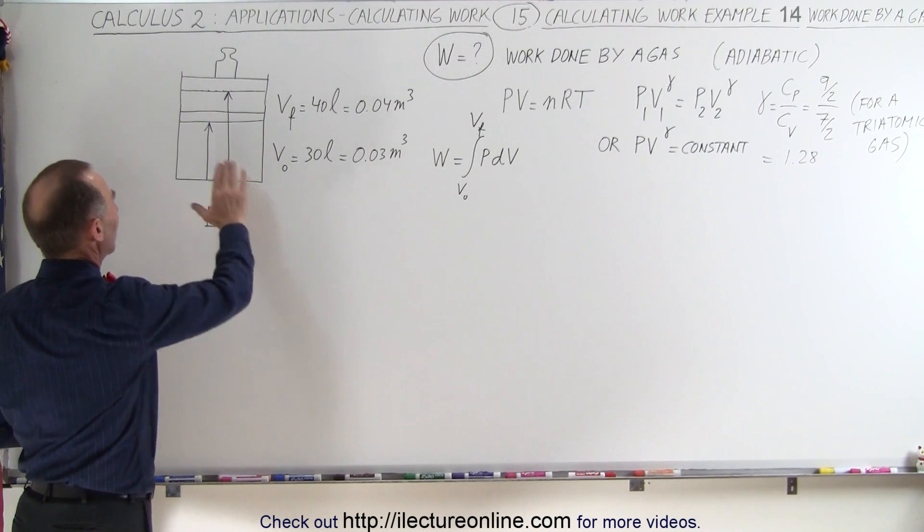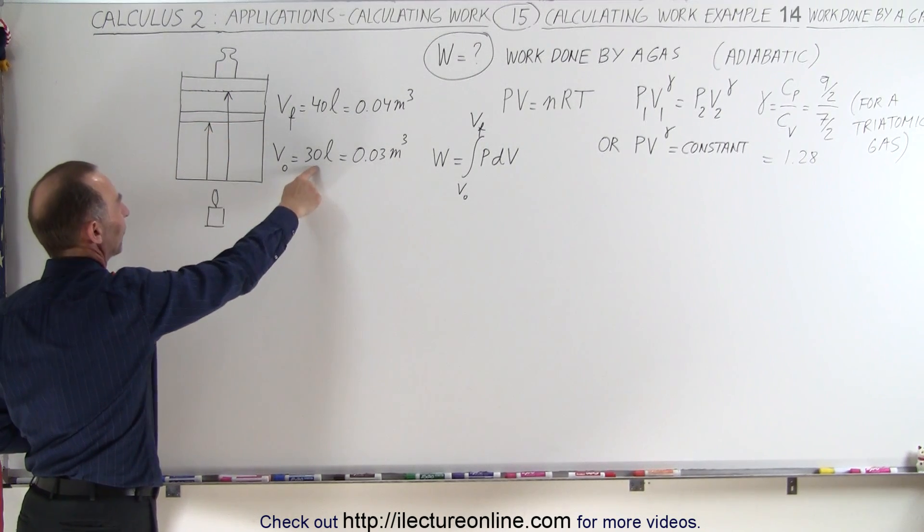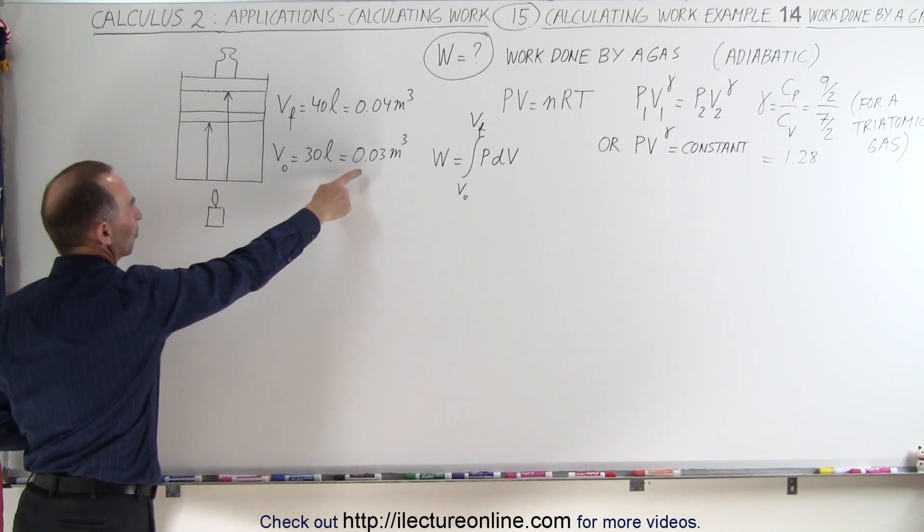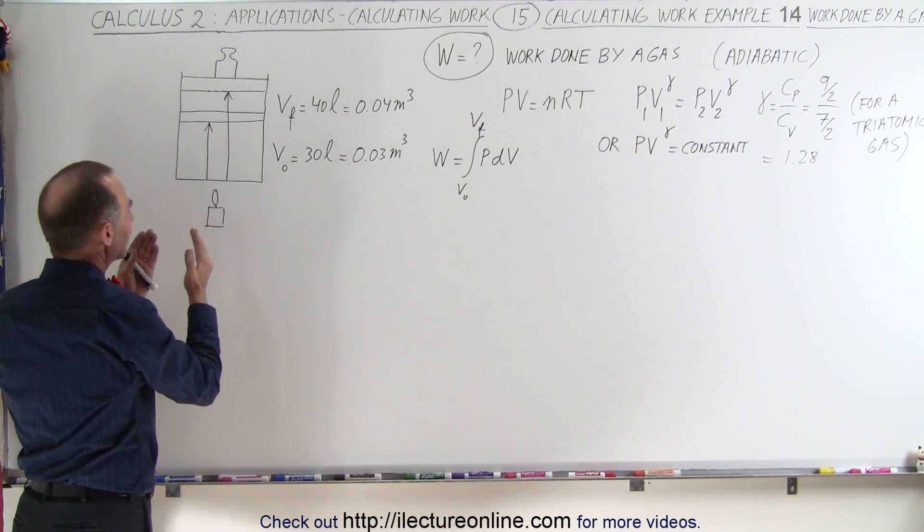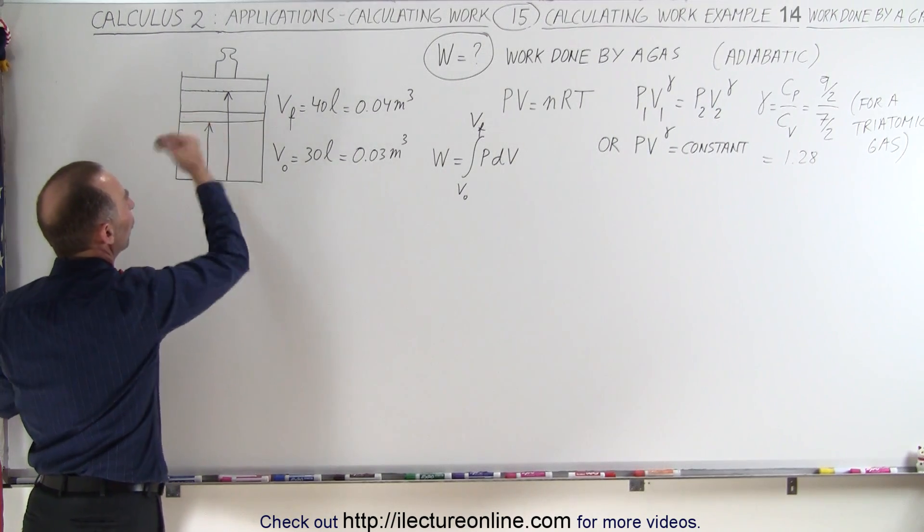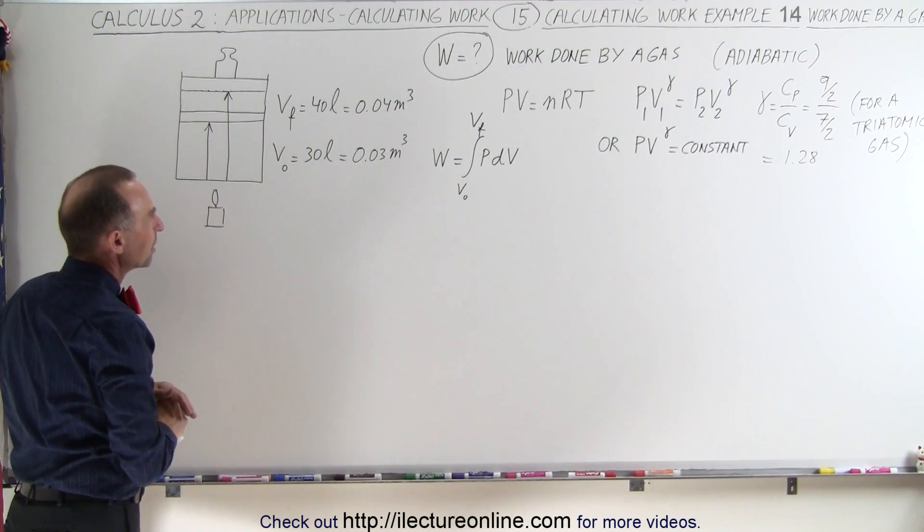Here we have a situation where we have a tank with a gas in it. We have 30 liters of the gas, which is 0.03 cubic meters. We heat the gas up so that it expands to 40 liters or 0.04 cubic meters.